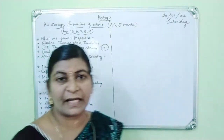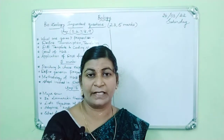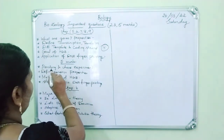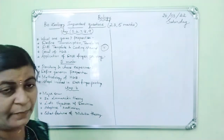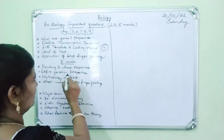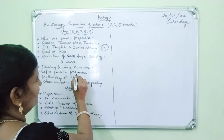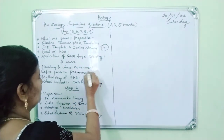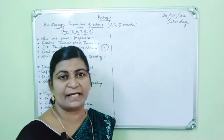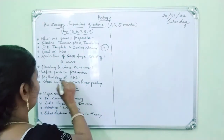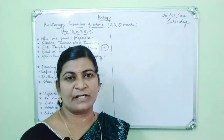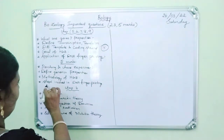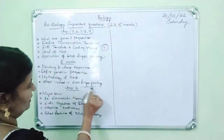Then: what is the goal of HGP? Then mention the application of DNA fingerprinting — it is an important question. Five mark questions include: explain the Hershey and Chase experiment, define genetics and mention the properties of genetics, explain the methodology of HGP, and describe the steps involved in DNA fingerprinting — the most important question.